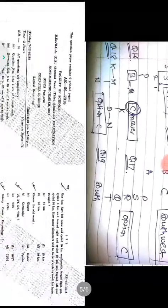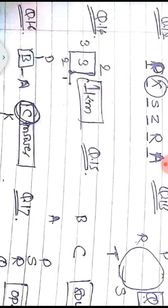Question fourteen: Rohan walks 3 km north, turns left and walks 2 km, turns left and walks 3 km, then turns left and walks 3 km. Drawing the pattern: 3 km, then left 2 km, then left 3 km, then left 3 km. He is 1 km away from the starting point.